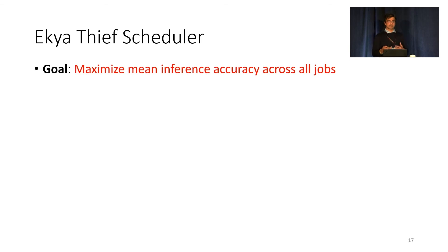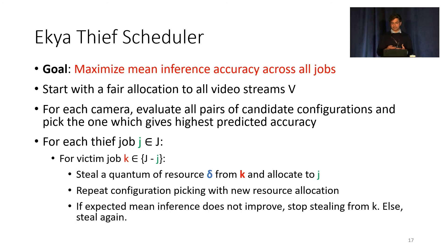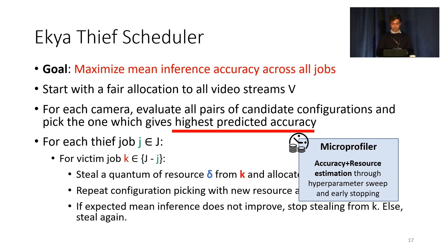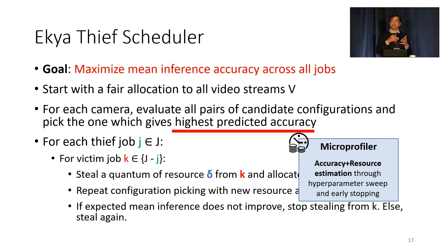I'll briefly touch upon the T-scheduler and the micro profiler. The goal of the T-scheduler is to maximize mean inference accuracy across all jobs. It starts with a fair allocation, and then each job iteratively steals tiny quanta of resources from other jobs, evaluates all possible pairs of candidate configurations with the new resource allocation, and if accuracy improves, it tries stealing another quantum — continuing until accuracy stops improving. Accuracy prediction, which estimates the retrained accuracy for a given video stream, is a key heuristic. These predictions are made by microprofiling, running a very short hyperparameter sweep with aggressive early stopping and configuration pruning.